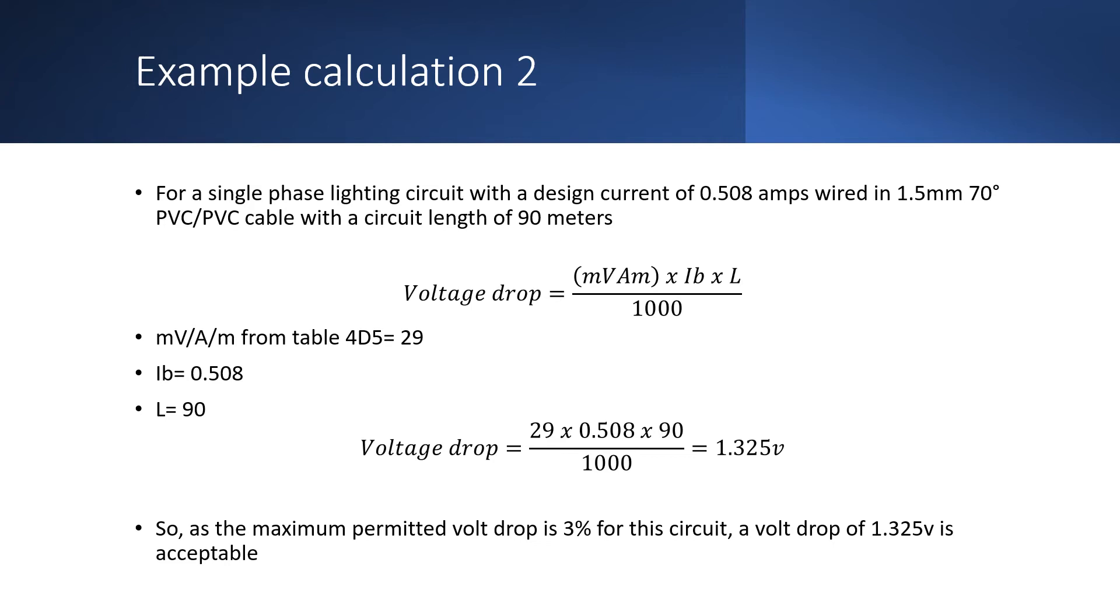So the equation becomes voltage drop equals 29 multiplied by 0.508 multiplied by 90 and then divided by 1000, and this comes to 1.325 volts. So as the maximum permitted volt drop is 3% for this circuit, a volt drop of 1.325 volts is acceptable.